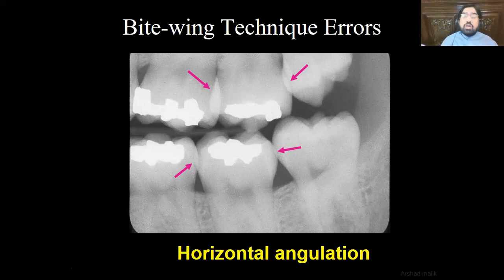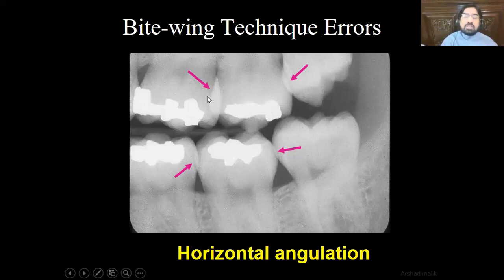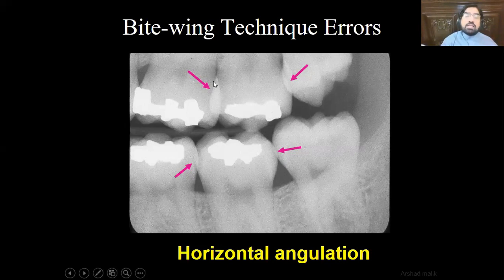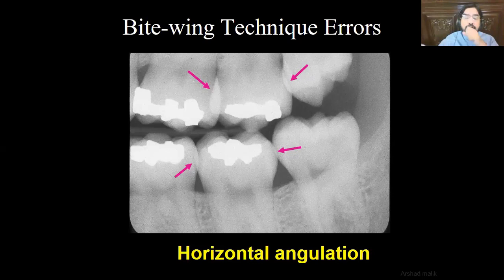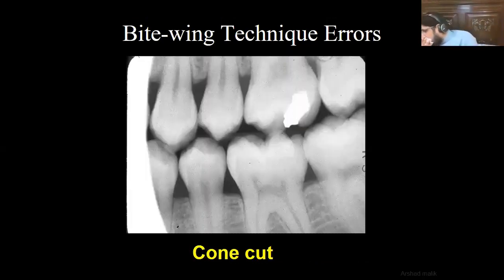Horizontal angulation error: if you do not keep it at plus 8 degrees, there is overlapping of the crown of the eighth onto the seventh and the seventh onto the sixth. The crown of the eighth overlaps the seventh and the seventh overlaps the sixth. If there is any lesion in this area, it will be masked by this overlapping of the interproximal area. So horizontal angulation is very important and must be noted while taking bite-wing X-rays.